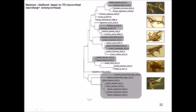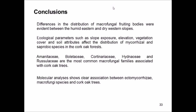In conclusion, differences in the distribution of macro fungi fruiting bodies were evident between the humid eastern and dry western slopes. Ecological parameters such as slope exposure, elevation, vegetation cover, and soil attributes can affect the distribution of mycorrhizal and saprotrophic fungi associated with cork oak. Using molecular tools, I found that families Amanitaceae, Boletaceae, Cortinariaceae, Hydnaceae, and Russulaceae are the most common macro fungal families associated with cork oak, and molecular analysis shows a clear association between ectomycorrhizal macro fungi species and cork oak tree.